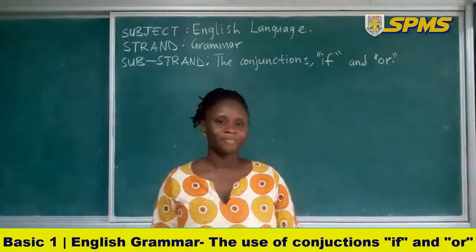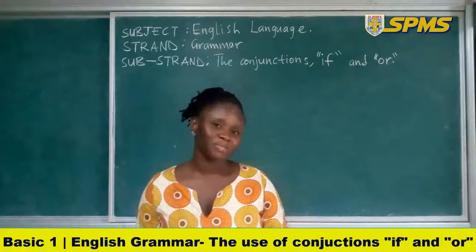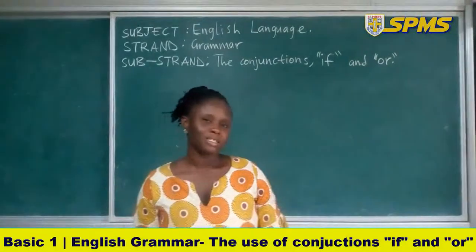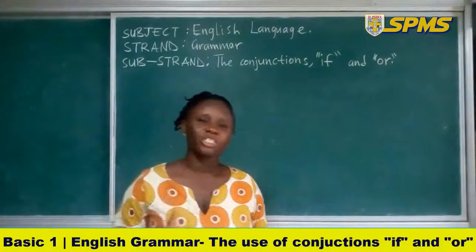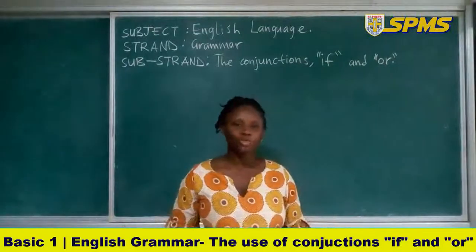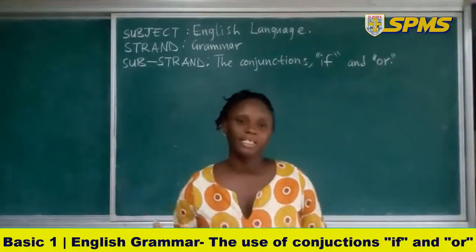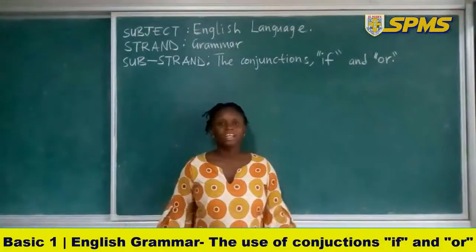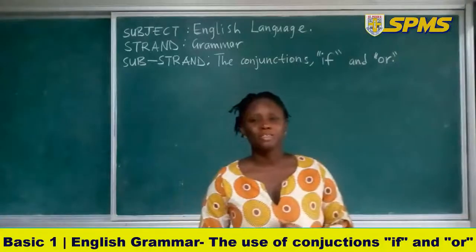Can you remember what we learned in our previous lesson? We learned about two conjunctions: the conjunction 'and' and the conjunction 'but'. The conjunction 'and' is used to join two sentences that are similar or alike, and the conjunction 'but' is used to join two contrasting sentences.